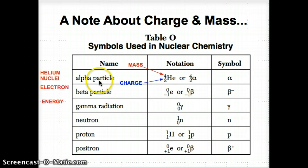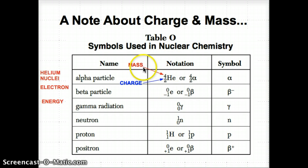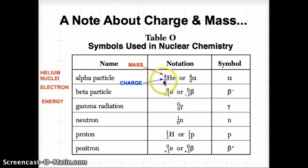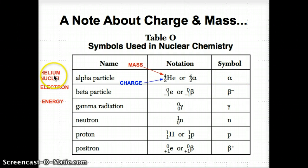There are three different particles: an alpha particle, a beta particle, and a gamma particle. The two numbers represent mass on top and charge on the bottom. The alpha particle has a mass of 4 and a charge of positive 2. It's noted as the Greek letter alpha, and alpha particles are also known as helium nuclei, because helium has a mass number of 4 and an atomic number of 2.